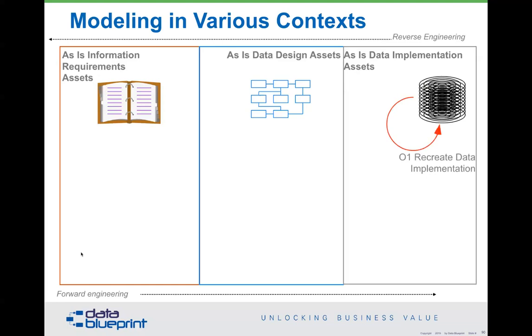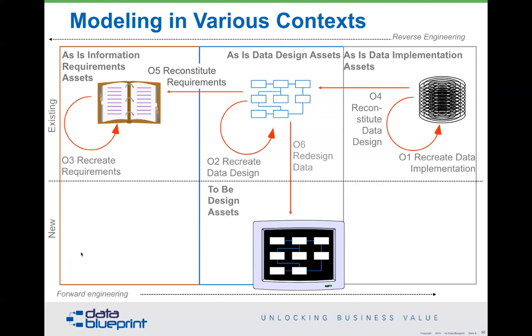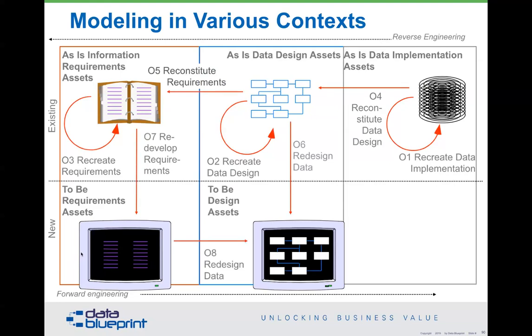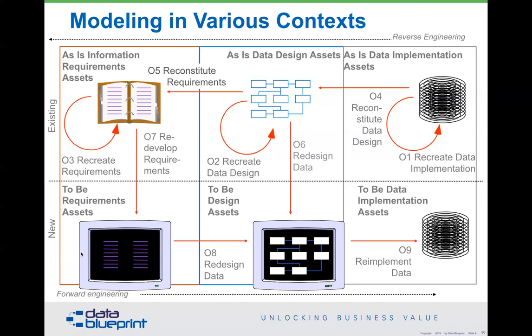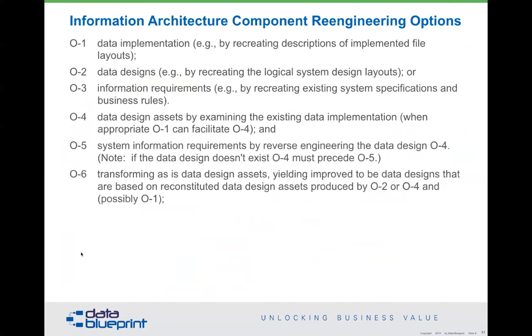Instead, we need to look more at reverse engineering — where we say we don't have documentation, so we may need to recreate the data, the design, or even the requirements. We may need to reverse engineer going from the physical as-is to the logical as-is, and from the logical as-is to the conceptual as-is. We then look at our new system. If we're not going to change the requirements, we can move directly to design. If we are going to change requirements, we have to re-engineer them and then redesign the data, and only then discuss what the new model for the new system should be. If we simply forklift data from the existing as-is to the new to-be implementation — which happens over and over again — we end up with the wrong fields and the wrong data, leading to data problems. All of this involves high degrees of metadata management.